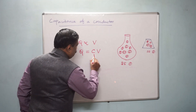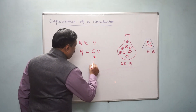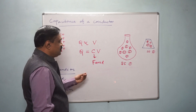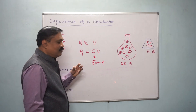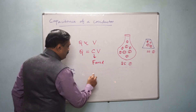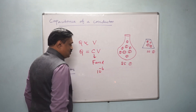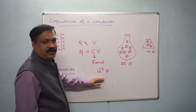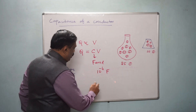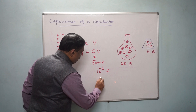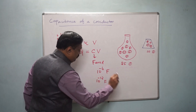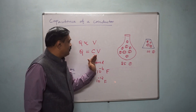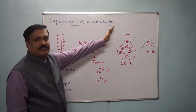Now, what is the unit for capacitance? It is Farad. But Farad is a big unit, so usually we measure capacitance as 10 to the power minus 6 Farad, that means microfarad, or 10 to the power minus 12 Farad, which is picofarad. This is the concept of capacitance of a conductor.